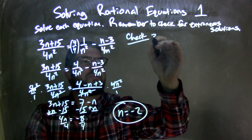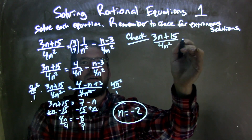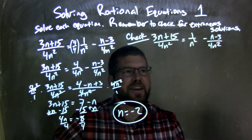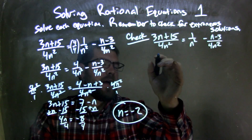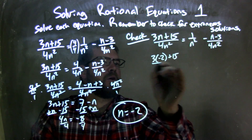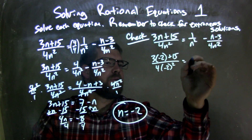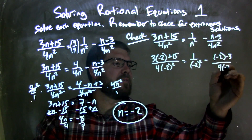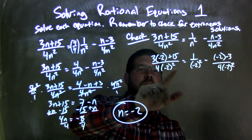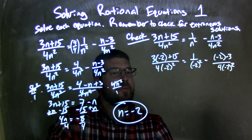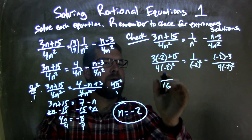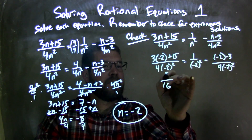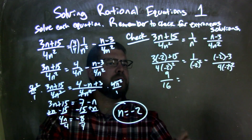Check that. So we have 3n plus 15 over 4n squared equals 1 over n squared minus n minus 3 over 4n squared. We're going to plug negative 2 in for our n. So we have 3 times negative 2 plus 15 over 4 times negative 2 squared, equals 1 over negative 2 squared minus negative 2 minus 3 over 4 times negative 2 squared. A lot to do here. Negative 2 squared comes out to positive 4, times 4 is 16, so we have 16 in the denominator. Negative 3 times negative 2 is negative 6, and negative 6 plus 15 is positive 9. So we have 9 sixteenths on the left.